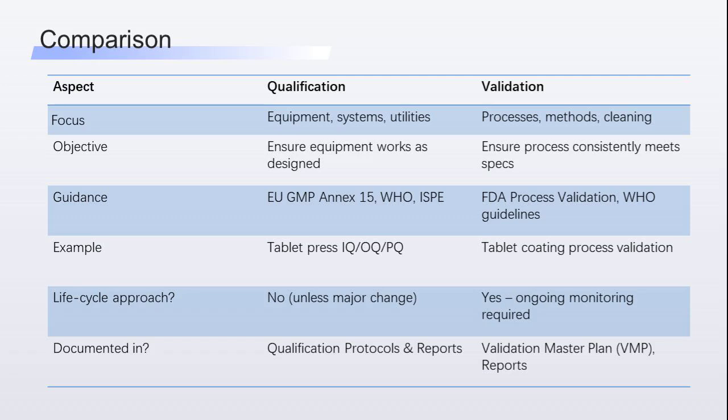For example, qualification covers IQ, OQ, PQ of a tablet press; validation covers process validation of the tablet coating process. Life cycle approach: qualification is usually one time unless there's a major change, while validation is ongoing with continuous monitoring. Finally, documentation: qualification involves protocols and reports — IQ, OQ, PQ; validation involves a validation master plan and reports. In short, qualification equals proving your equipment works; validation equals proving your process works, over and over again.